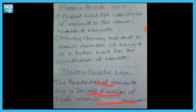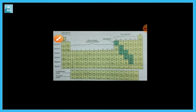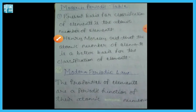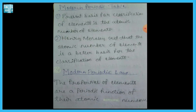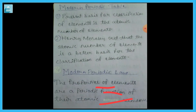Periodic function means that the properties of elements are repeated after regular intervals. Elements arranged in order of increasing atomic number show repeating physical and chemical properties. For example, if you look at lithium, sodium, and potassium in the periodic table — going down the table, their properties are the same. This is the modern periodic law: properties repeat after a certain interval.